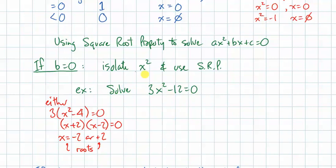I could have done this another way. Isolate x squared and use square root property. So, let's look at what that looks like. 3x squared equals 12. Now, let's divide by 3. x squared equals 4.